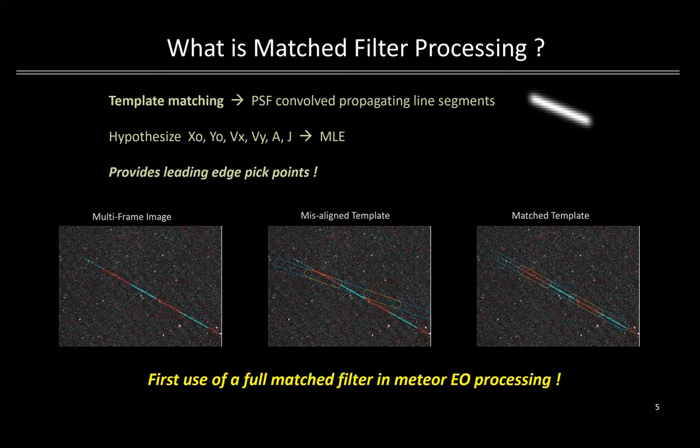To our knowledge, this is the first application of a full match filter with clutter suppression applied to EO meteor processing. Note that a pseudo match filter approximation was once used in the 1998 Meteor Scan meteor detection software.